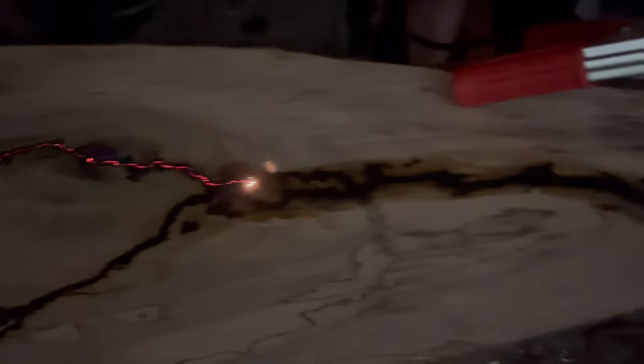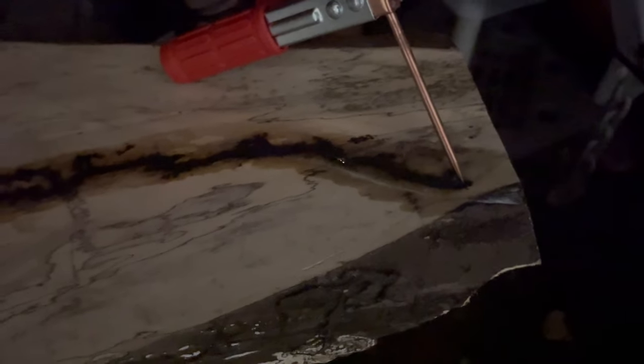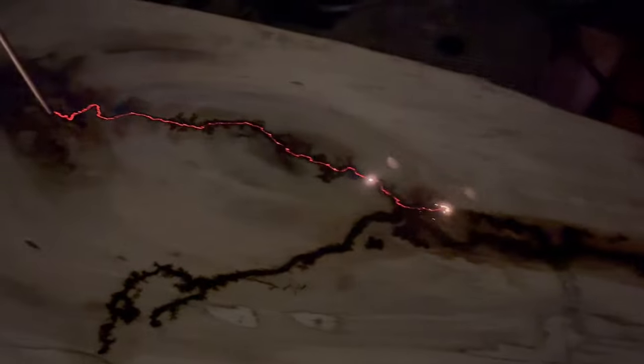Once we got the path established that we wanted, we just let the rod sit at either end of the wood and burn deeper down into the wood to create that valley for the epoxy.